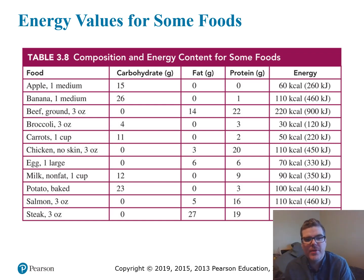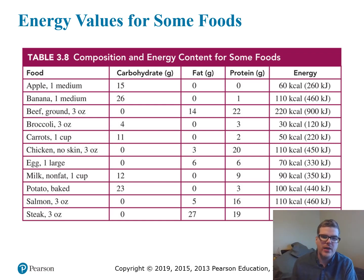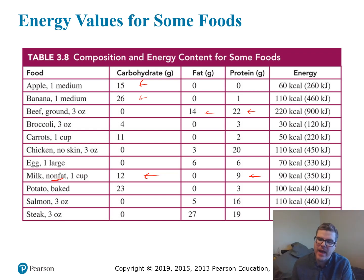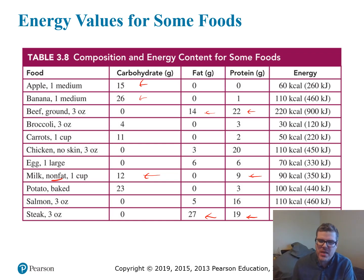Here is a chart breaking down common foods by their energy content based on carbohydrate, fat, and protein content. Fruits like apples and bananas are mostly carbohydrates — mostly sugars and fibers — with very little fat or protein. Beef has very little carbohydrate and is mostly fat and protein. Non-fat milk has carbohydrates like lactose and protein but no fat since it's been removed. Whole milk is pretty well balanced across all three types. Steak is very high in fat with a lot of protein, as is true of most meats.